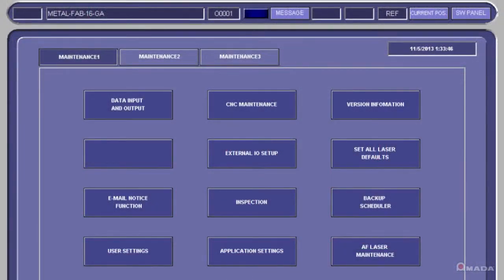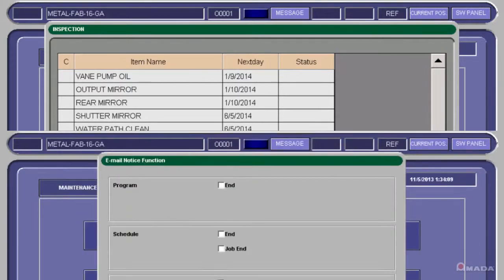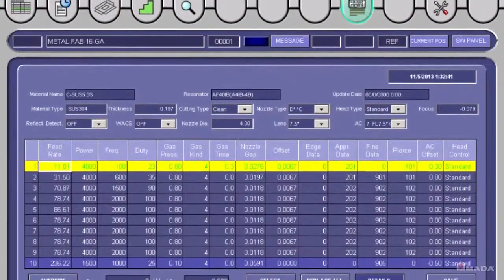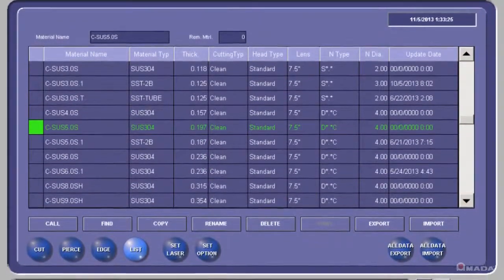Easily keep track of maintenance intervals with the maintenance panel and also set up email notifications for machine alerts and jobs in progress. For laser cutting, the control comes with a preset library of cutting conditions which can be customized and saved.